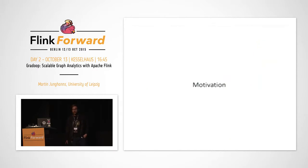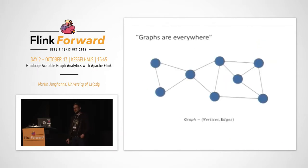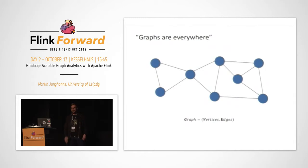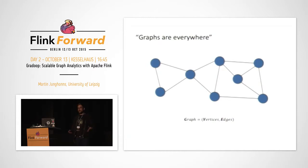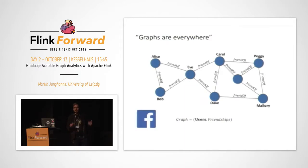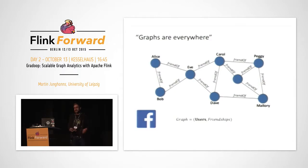Let's start with some motivation. I guess all of you know what a graph is, but let me give you a short reminder. In its basic structure, it's a set of vertices — the blue circles — that are connected by edges. This is a really interesting data structure, and there's a quote from the Neo4j guys, a graph database vendor, that tells us that graphs are everywhere, which means this data model can be applied in a lot of applications. One application: if you add some information to your vertices and edges, you get something like a social network, where vertices are users connected by friendship relations.